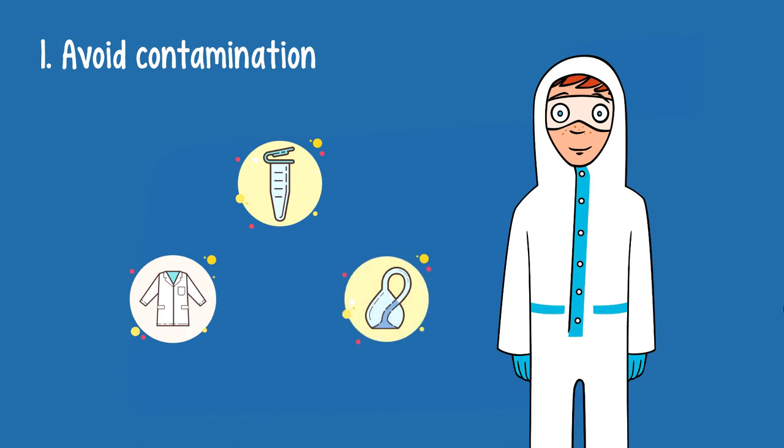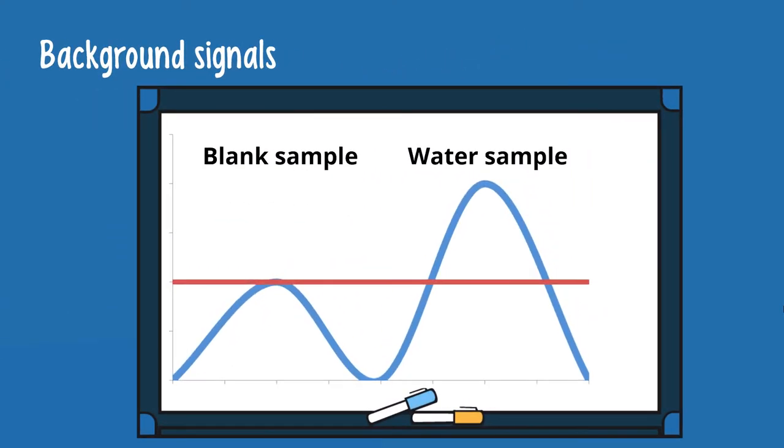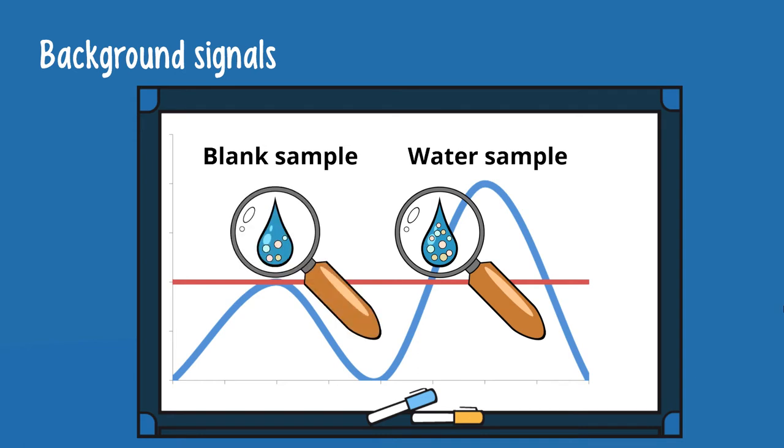Still, they cannot avoid contamination 100%. To account for that, they take so-called blank samples, which help determine the microplastic background signal. The background signal is then subtracted from the water sample value to correct for potential contamination and estimate the real signal. In this study, background signals were low, but they can cause problems. For example, your water contains 10 particles and your average background contamination is 5 particles. Do you find something here, or is it just background noise? Then again, if you find 100 particles in your sample, you will be more confident to conclude that you detected microplastics in your water.